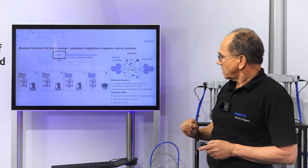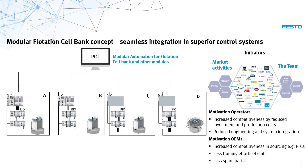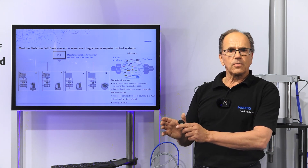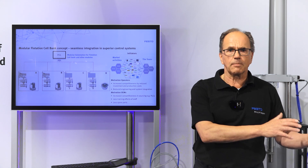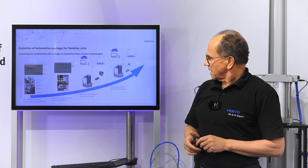The motivation for operators includes more flexibility, as I mentioned, but also increased competitiveness by reduced investments. The expectation is to achieve economy of scale on the modules, reduced engineering and system integration through standardized communication, faster deployment, and reduced time to market. For OEMs, this also increases competitiveness in sourcing the PLC — the OEM now has the freedom to choose their PLC and train their employees on just one PLC, with no need to have trained people for ABB, Schneider, and Amazon PLCs separately. This reduces costs and effort.